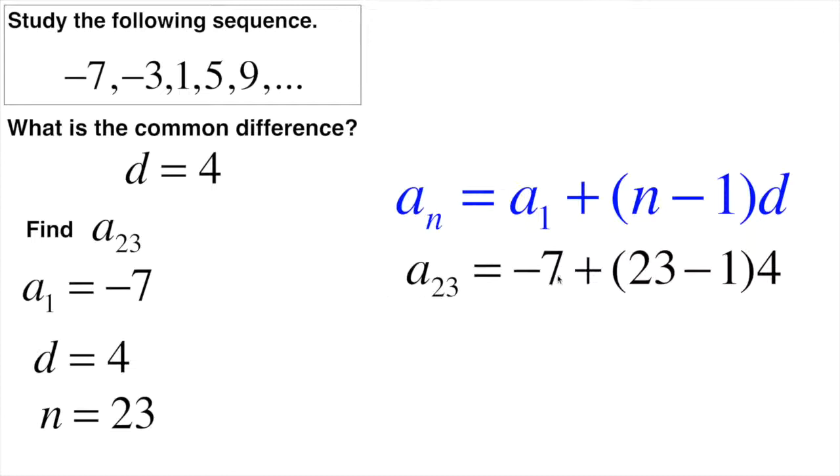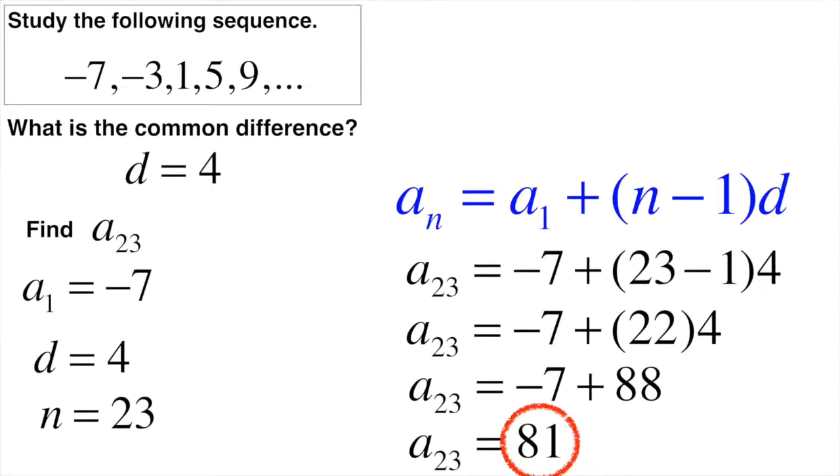Now, in order to find this one, all we're going to have to do is simplify the right-hand side. So I take here, and I go 23 using my order of operations. I do parentheses first. 23 minus 1 would give me 22. Now I go 22 times 4, which is 88. Then 88, negative 7 plus 88 would give me 81. So a of 23 would be 81. This is the 23rd term in this sequence would be 81.